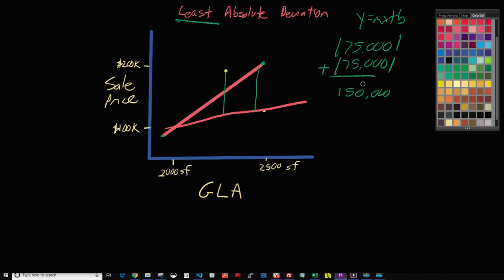Whatever line resulted in the lowest sum — that y equals mx plus b — is basically our result from least absolute deviation. So in that case, it would give us something like 60x plus 80,000. What's important here, at least in getting adjustment support, is the 60. That is the number that could potentially be our adjustment for GLA. And that's the way least absolute deviation works.